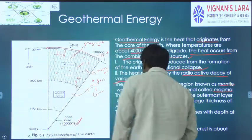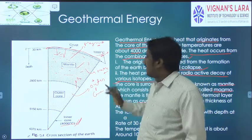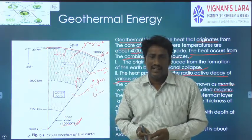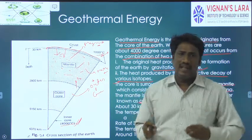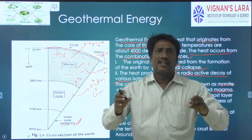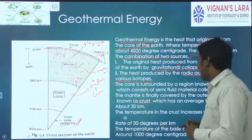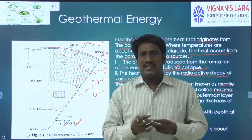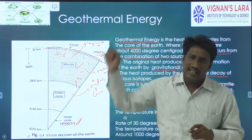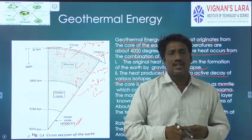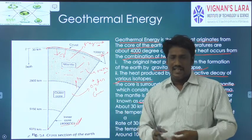The temperature at the base of the crust is about 1000 degrees centigrade. Inside the earth, there is a huge amount of temperature available because of two reasons: first, gravitational collapse during the earth's formation generates huge heat; and second, because of radioactive decay of many isotopes such as uranium and others, a huge amount of heat is developed and stored inside the earth.